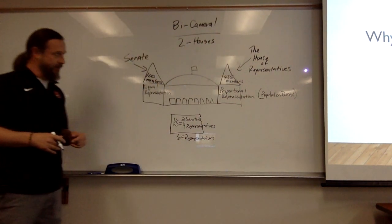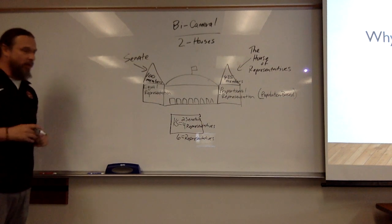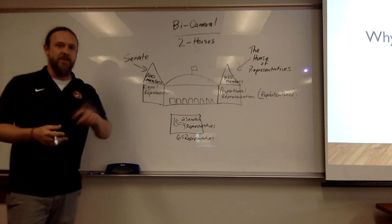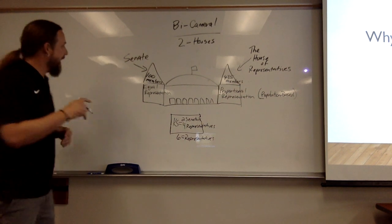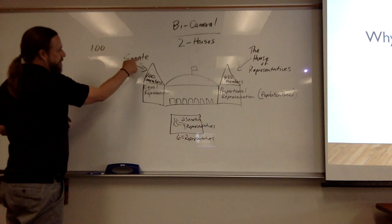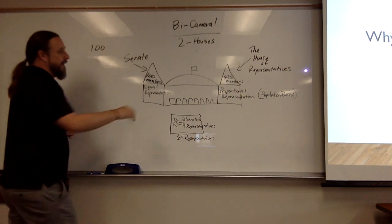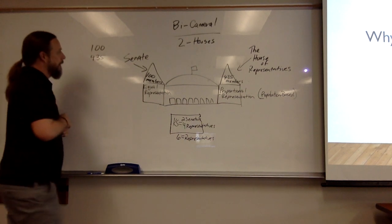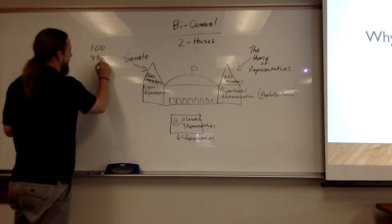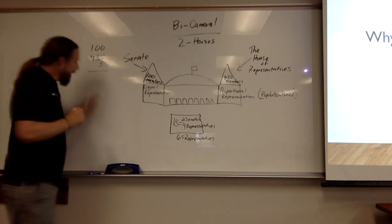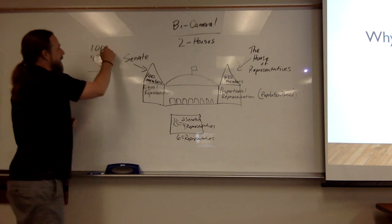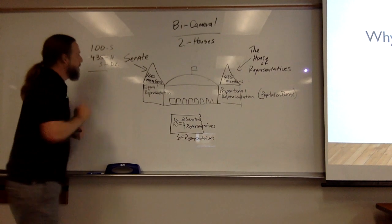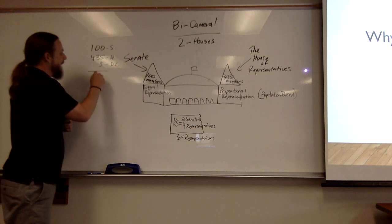One last thing I'd like for you to add to this real quick. We're going to put a really simple equation on the board. This equation is going to make more sense in our next unit, but I want us to be aware of it now. We're going to take 100 senators, add 435 to that, then add 3 to that. The reason we're adding 3 — this 100 represents the Senate, 435 represents the House, and 3 represents Washington DC. Add that up and you come up with the number 538.